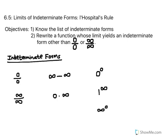The objectives for today's lesson are: 1. Know the list of indeterminate forms — we saw these yesterday and want to review them. And 2. Rewrite a function whose limit yields an indeterminate form other than 0/0 or ∞/∞. Although we have 7 indeterminate forms, only the first 2 are the ones for which we can apply L'Hôpital's Rule.